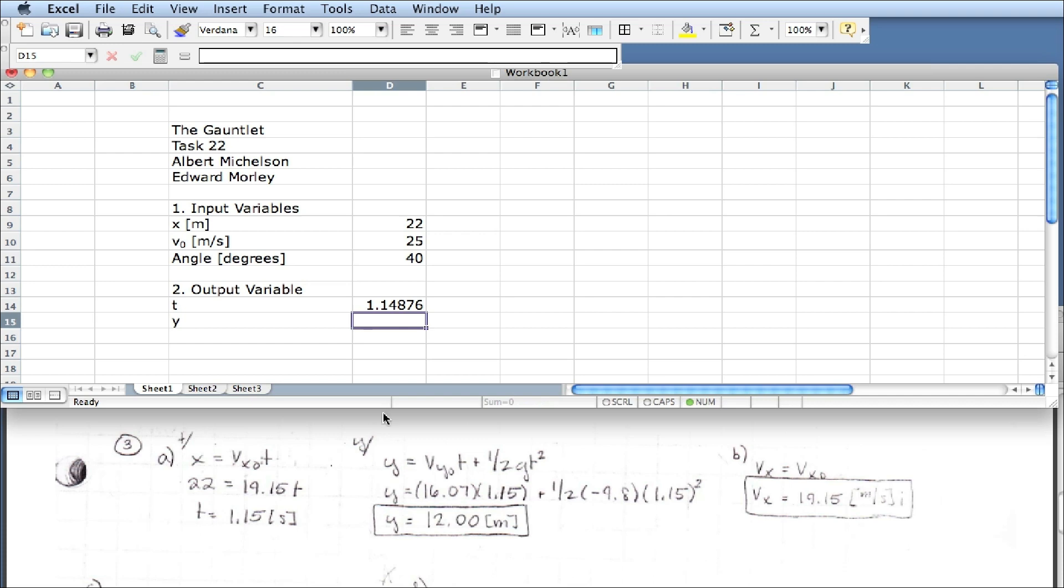For the y variable, it looks like it's the sine component, the vy sine component, times the time, which we now know, minus one half g t squared. So this is going to be equal to v0 sine times, you need to times the sine of this. Remember, we have to multiply by pi, capital P I, parentheses, divided by 180. That's vy0 times the time, so it's right here, plus one half times negative 9.8 times time, times time. So vy0 times time, d14, right there, plus one half g t squared. I just multiplied twice for the square, and I get 11.99.